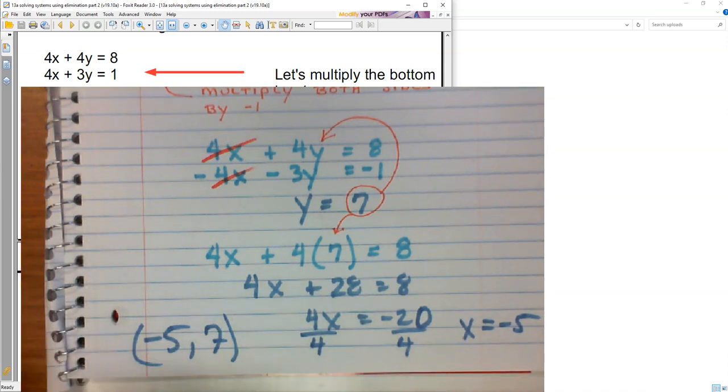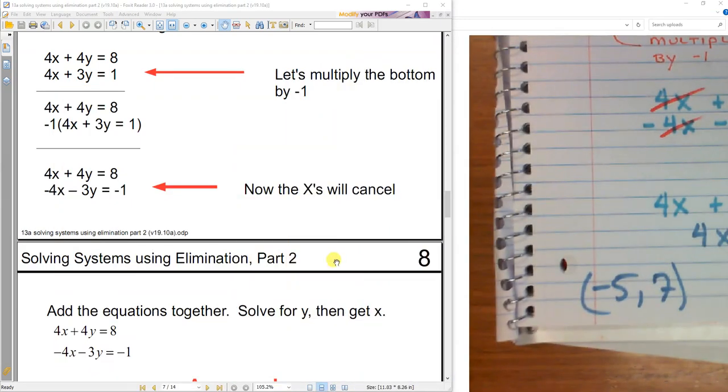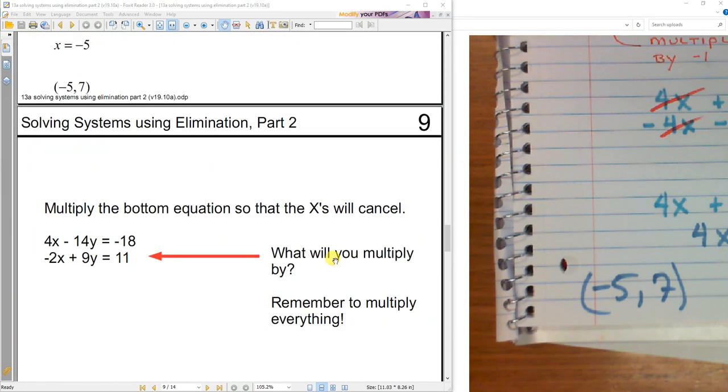So I have negative 5 comma 7, which is a physical point where the two lines cross. So we've got to get something to cancel out. Negative 5 comma 7. So here, what would you multiply the bottom by in order to get something to cancel out? So I'm really looking at this and I'm trying to figure out how can I get something to cancel? Well, if I multiply the bottom by 2, I have negative 4x plus 18y equals 22. This equation is now gone. And this is what I'm left with. And now I'm ready to solve it. That's today's lesson.